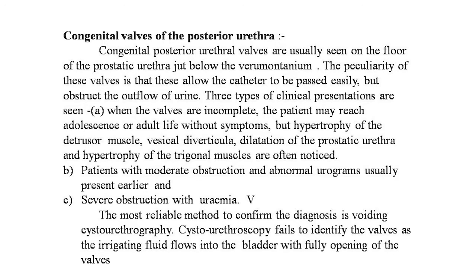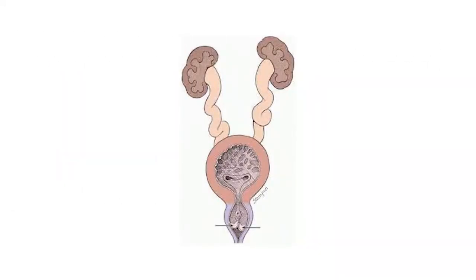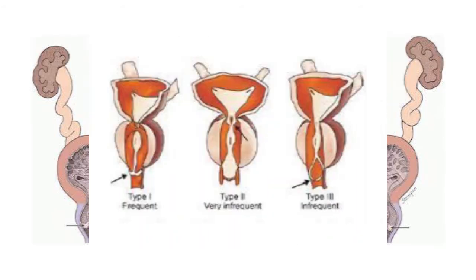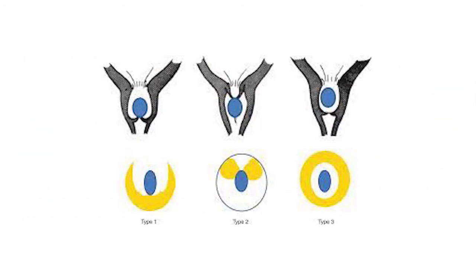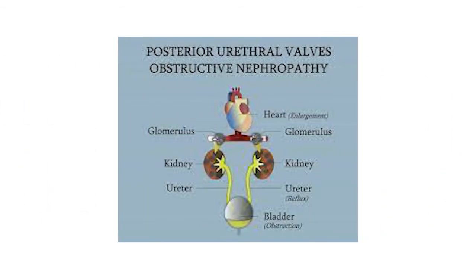Here is a clear picture showing congenital valves of the prostatic urethra: how it affects the bladder, causing thickening of the bladder wall, megaureter, ureteronephrosis, and hydronephrosis. There are three types: Type 1 is the most frequent, Type 2 is very infrequent, and Type 3 is infrequent — all clearly seen in the animated picture.